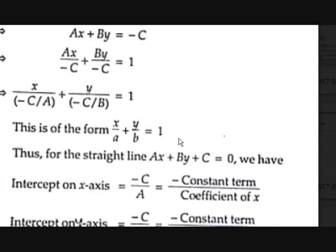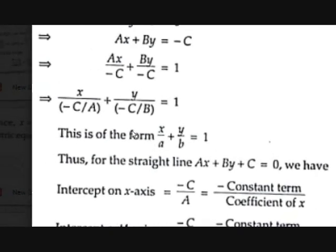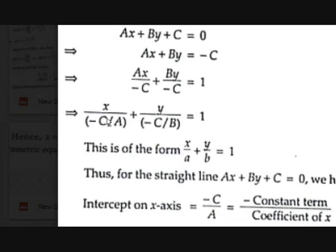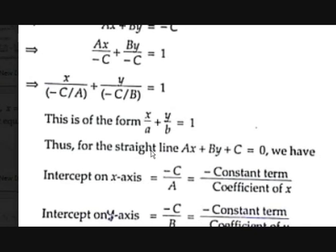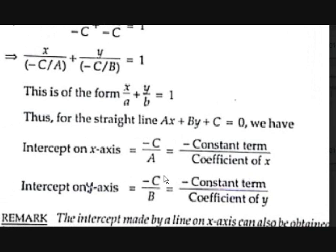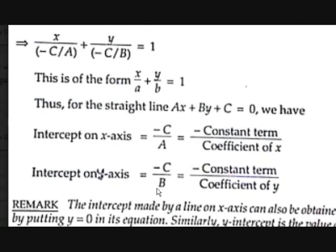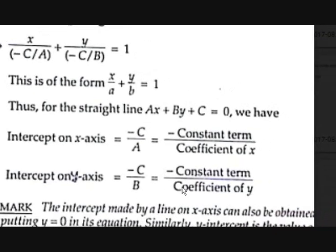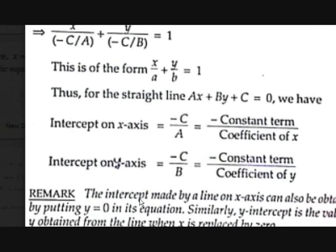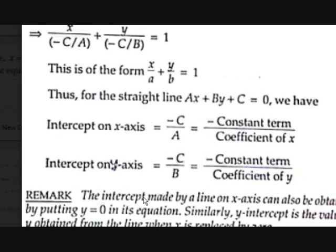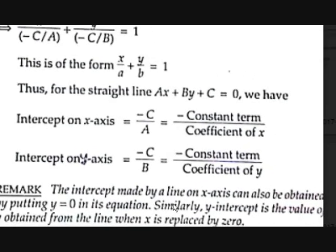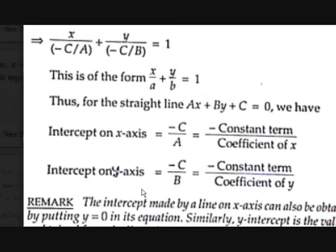So the intercept on the x-axis is −C/A, meaning minus the constant term divided by the coefficient of x. Similarly, the intercept on the y-axis is −C/B, minus the constant term divided by the coefficient of y. An important point: the x-intercept can also be obtained by putting y = 0 in the equation, and the y-intercept is the value of y when x is replaced by zero.